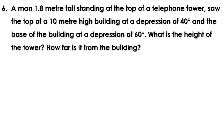Next problem: a man 1.8 meters tall standing at the top of a telephone tower sees the top of a 10-meter high building at a depression of 40 degrees and the base of the building at a depression of 60 degrees. What is the height of the tower and how far is it from the building? The building is smaller than the telephone tower because from the top the man looks downward to see the top of the building. We need to find the height of the telephone tower and the distance between them.